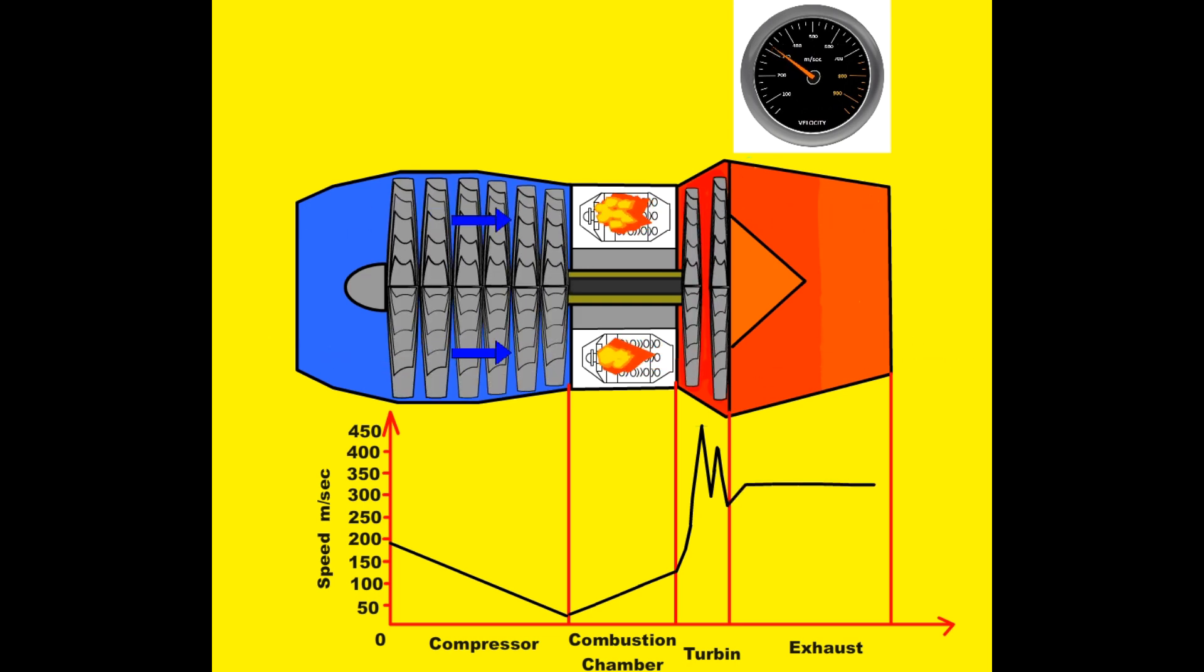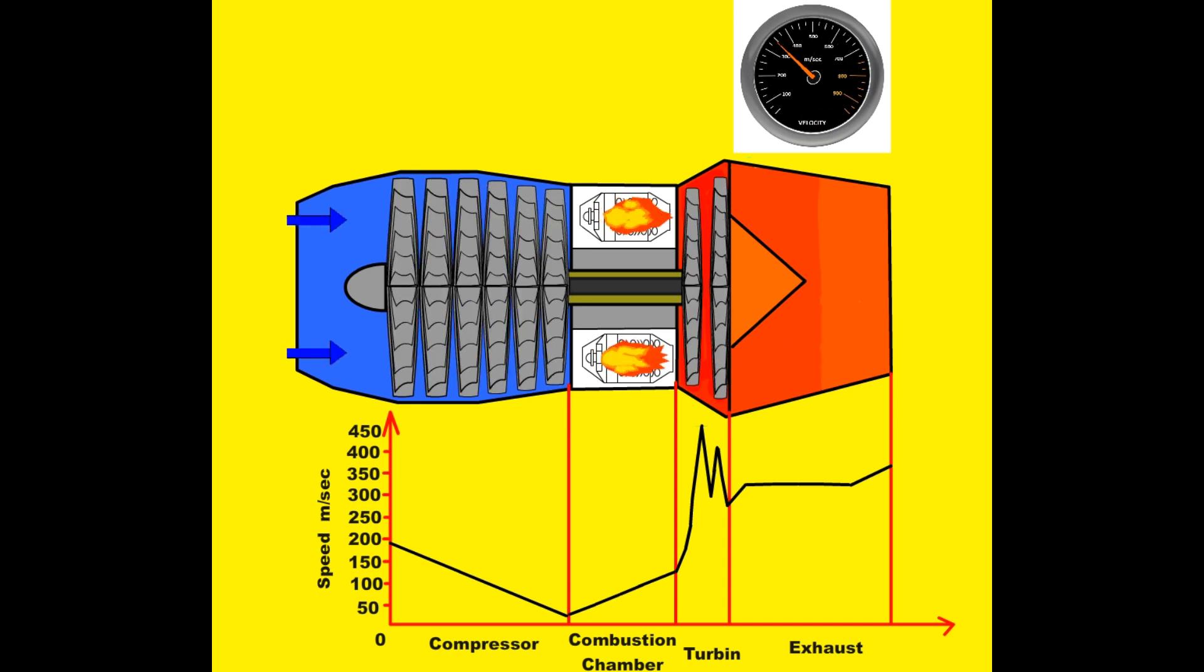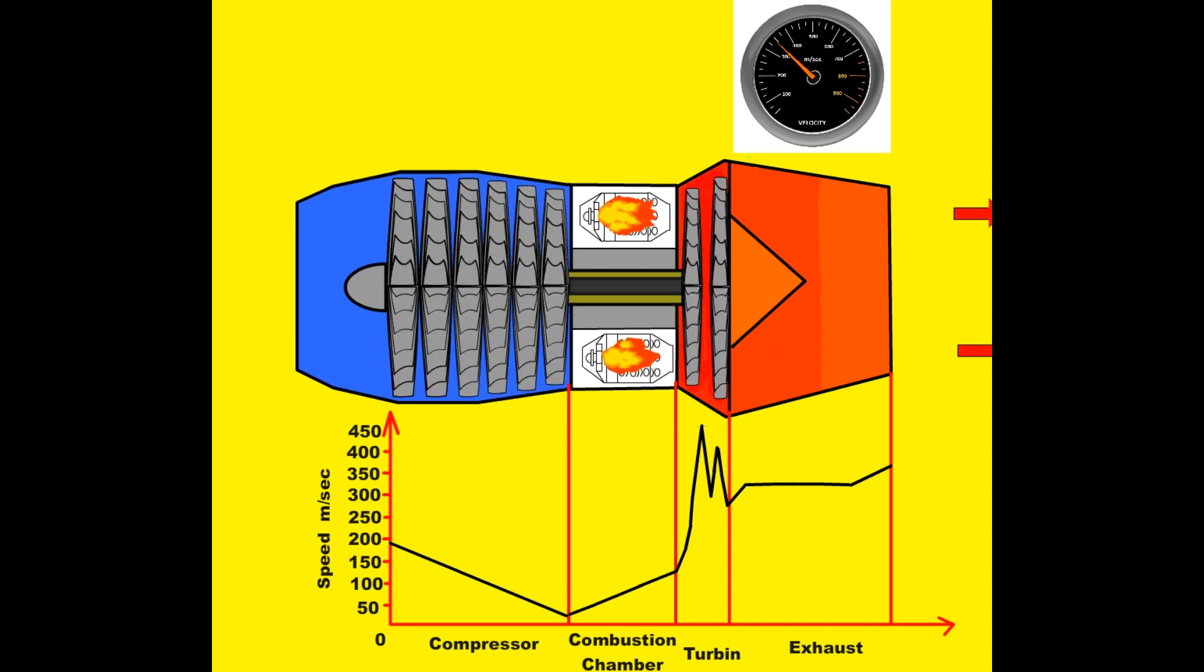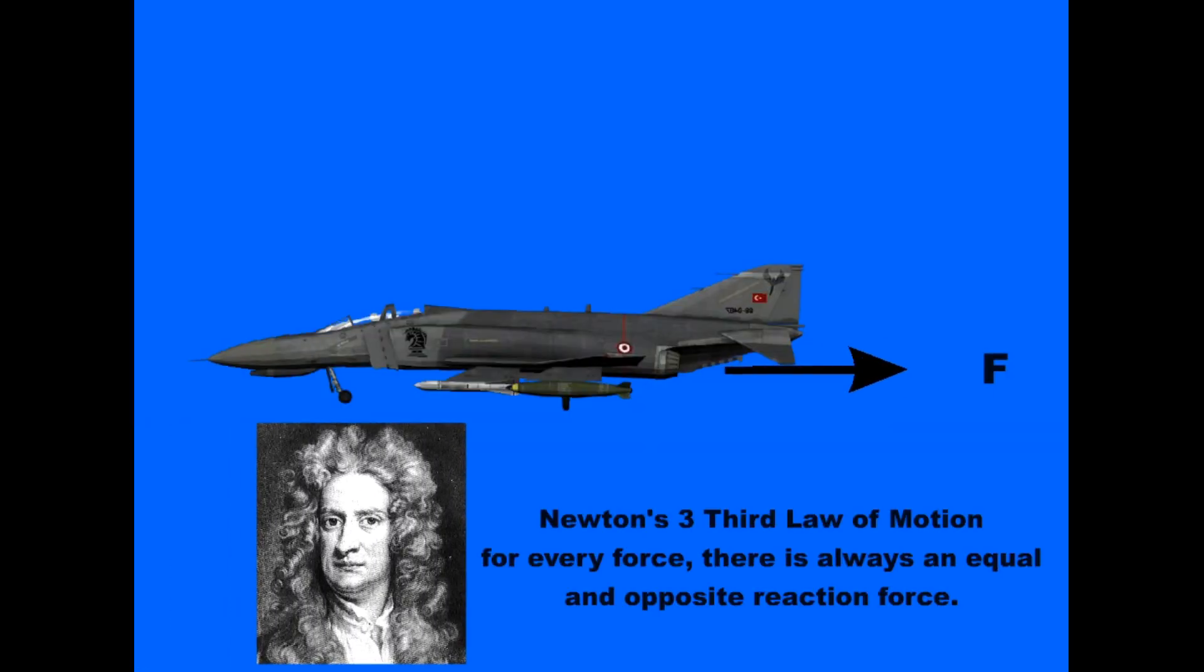The velocity of the gases coming out of the convergent area of the exhaust nozzle increases in accordance with Bernoulli's principle. In this case, thrust occurs, which we will explain in detail later. In fact, the forward motion of aircraft is related to the force generated by the velocity of the gases exiting to exhaust. This situation is explained by Newton's third law of motion.